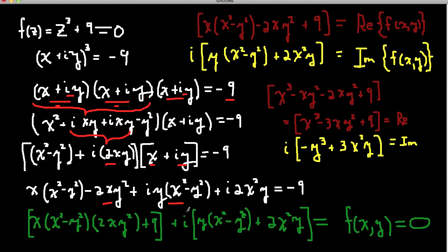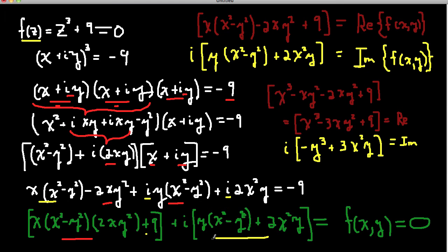I take all the real parts and group them together, and take all the imaginary parts and group them together. I bring the 9 back over to this side, so it becomes a plus sign again. These are the real parts, and the imaginary parts are all the terms multiplying by i. So this is f of x, y — or equivalently, f of z. Here's the real part of the function and here's the imaginary part of the function, written right up here.